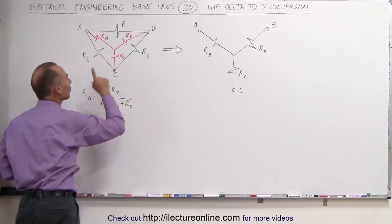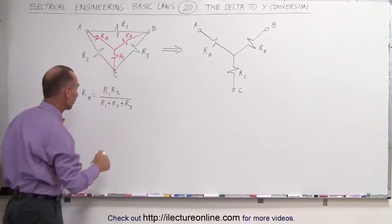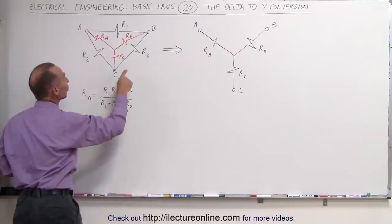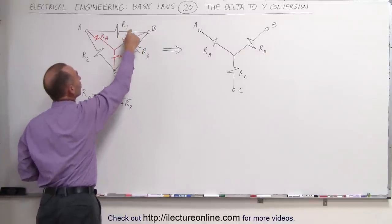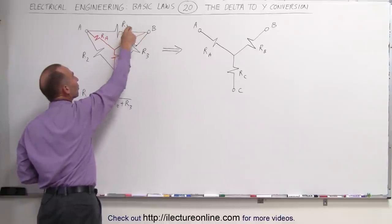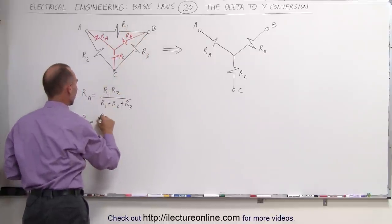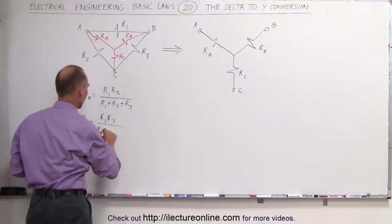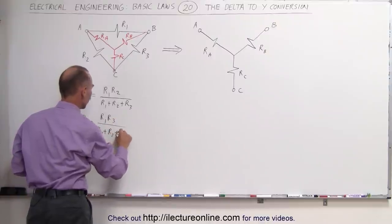It turns out all three of them will be divided by the sum of the three resistors. RB can now be found to be equal to the product of the two resistors it's in between. RB is between R1 and R3, so this becomes R1 times R3 divided by R1 plus R2 plus R3.